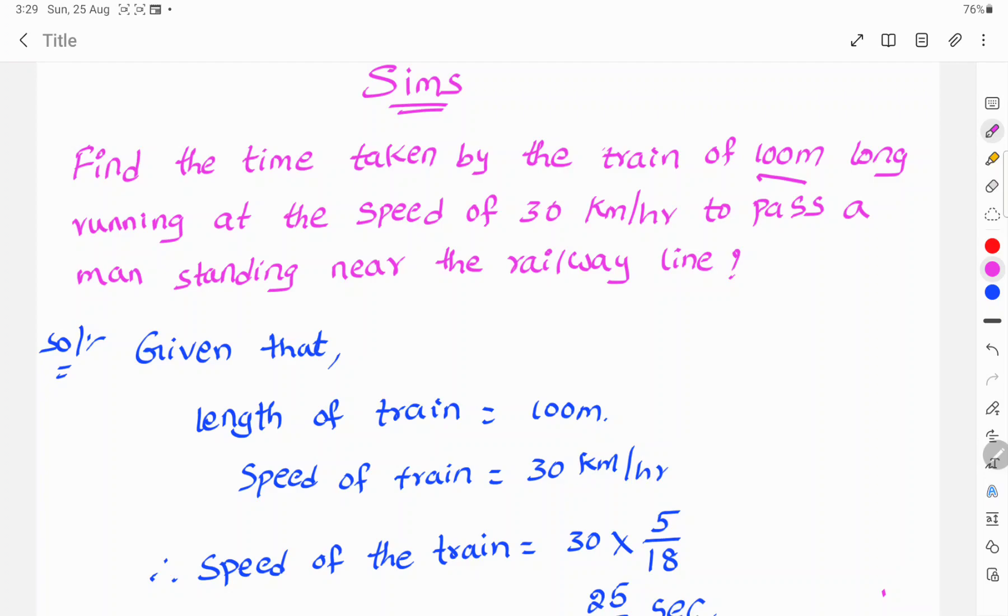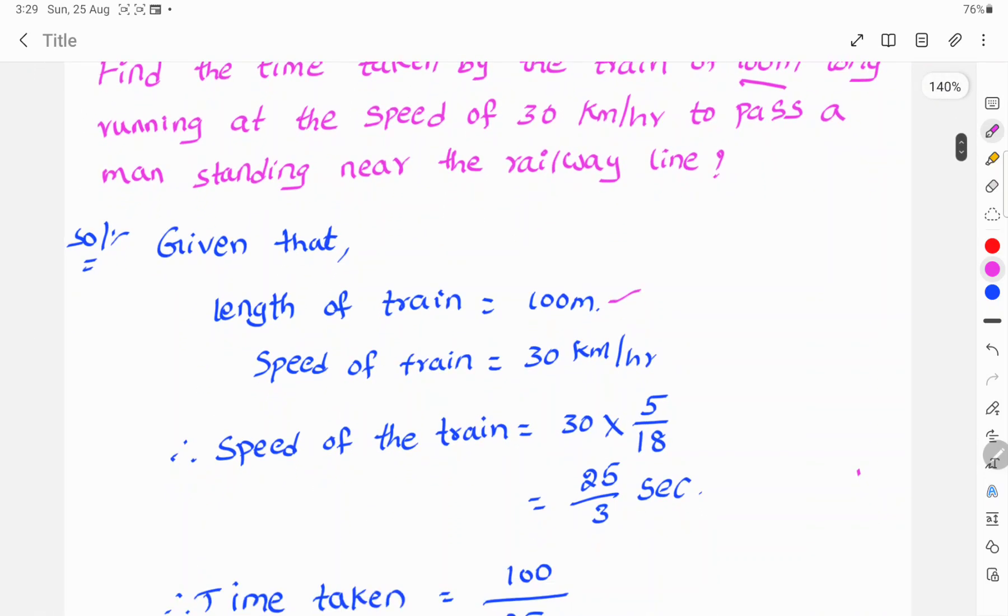30 kilometers per hour is changed to meters per second because here given length is in meters. So to match these two units, to change the speed in meters per second, you will multiply by 5 by 18.